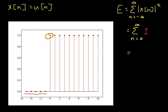When n is equal to 0, I have 1. When n is equal to 1, I add 1, so I've got 2. When n is equal to 2, I add 1, so I've got 3, and so on. As n gets bigger, the sum is going to continue to get bigger. Going from 0 to infinity, the sum is going to be infinite. This is a signal with infinite energy.